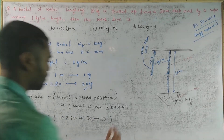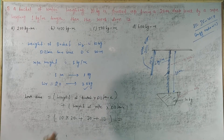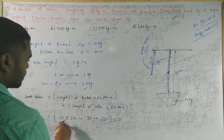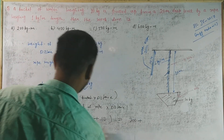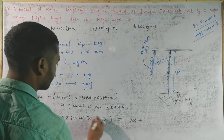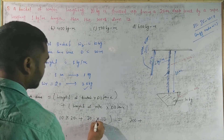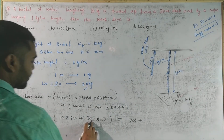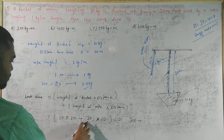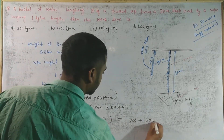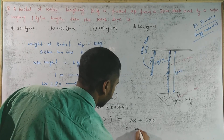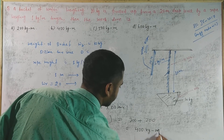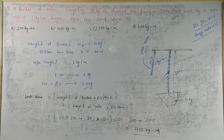Calculating: work done = (10 × 20) + (20 × 10) = 200 + 200 = 400 kg·m. Work done is force × distance, i.e., weight × distance. So the answer is 400 kg·meter — option B, 400 kg·m.